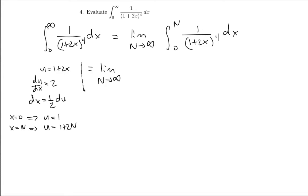We're also going to have different bounds. We have 0 and n, so we're going to have to turn those into our u versions. When x equals 0, our lower bound, u is equal to 1. And when x is equal to n, u is equal to 1 plus 2n because I just substituted n in for x. So rather than start at x equals 0 I start at u equals 1, and rather than end at x equals n I end at u equals 1 plus 2n.